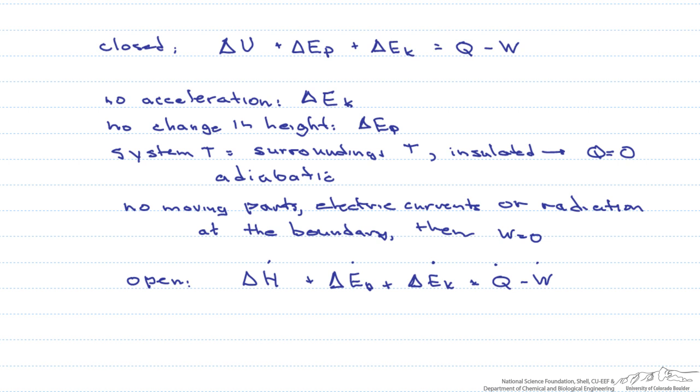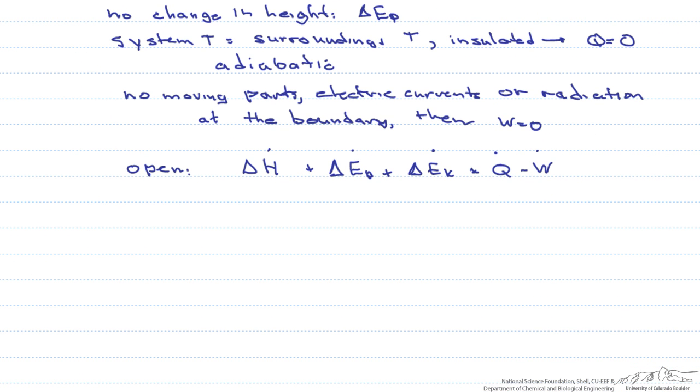One important thing to note here is that the change in energy, such as delta H, delta U, etc., is the difference between the final enthalpy and the initial enthalpy. This is the difference between the final and initial enthalpy of the system. However, with Q and W, this depends on what happens across the boundary between the system and the surroundings.